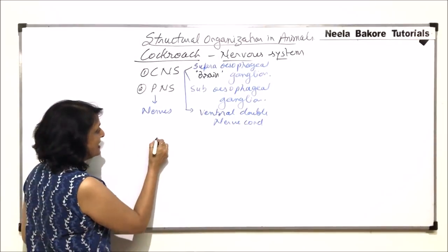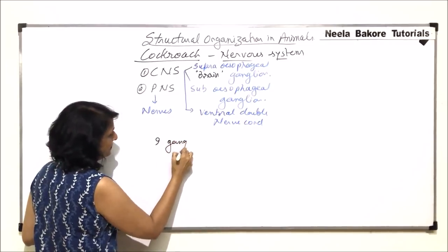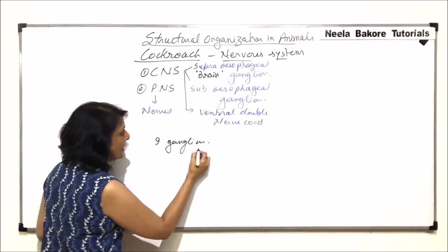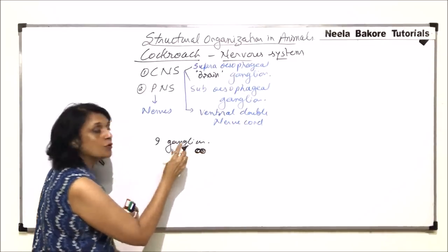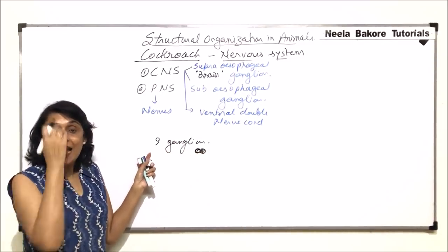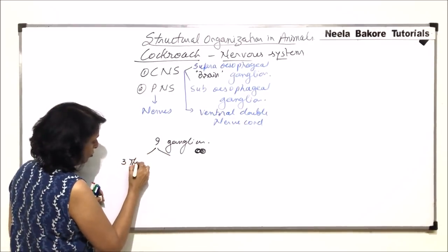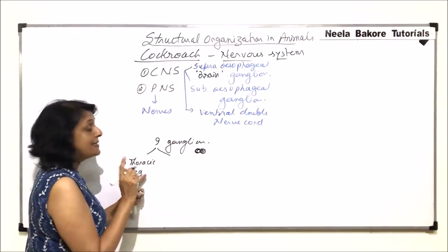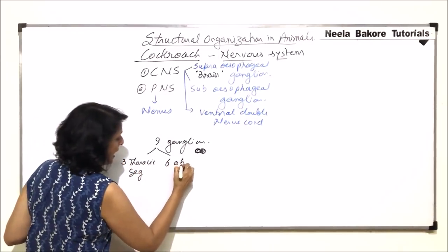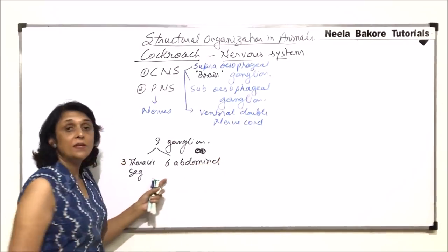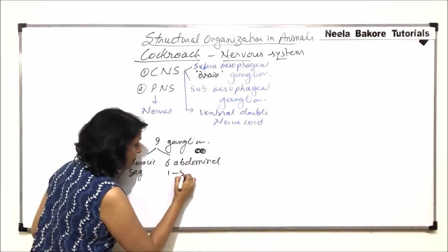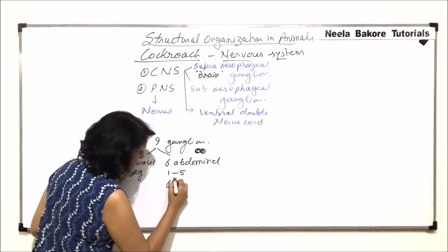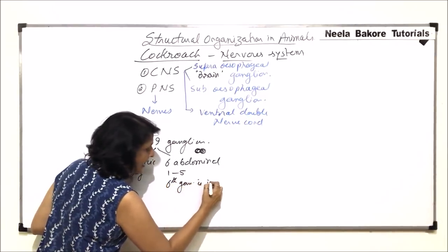Cockroaches have nine ganglia, and these nine ganglia are actually paired but fused. Three are located in the three thoracic segments — prothorax, mesothorax, and metathorax — and six are in the abdominal region. The six abdominal ganglia are present in the first to fifth abdominal segments, but the sixth ganglion is located in the seventh abdominal segment.